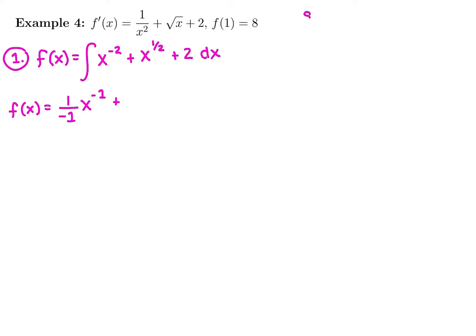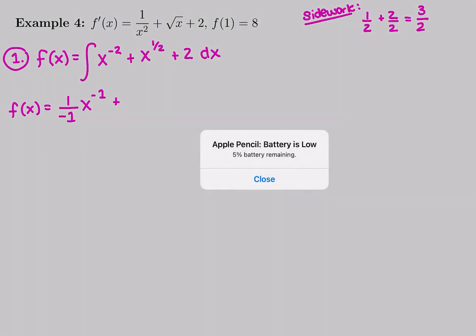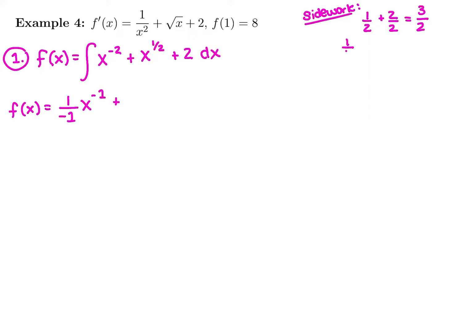Plus I'm going to have to do some side work here. We have some fractions to work with. So my old power was 1 half, and we have to add 1 to that, which is going to give us 1 plus 2 halves, which is 3 halves. So our antiderivative would be 1 over 3 halves, x to the 3 halves.